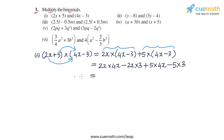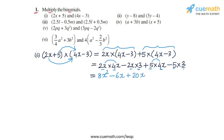Now we calculate each product. 2x into 4x: 2 times 4 is 8 and x times x is x squared, so we get 8x squared. Then minus 2x into 3 gives minus 6x. Then 5 into 4x: 5 times 4 is 20, so plus 20x. And minus 5 into 3 gives minus 15.